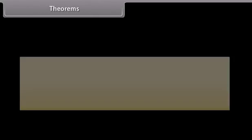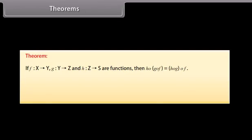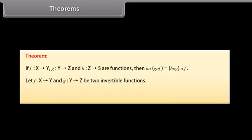Theorems. If function f from x to y, function g from y to z, and function h from z to s are functions, then h∘(g∘f) = (h∘g)∘f. Let function f from x to y and function g from y to z be two invertible functions. Then g∘f is also invertible with inverse of g∘f equal to f⁻¹ ∘ g⁻¹.